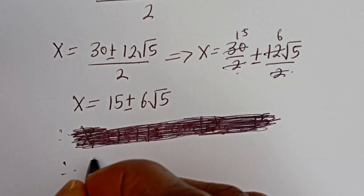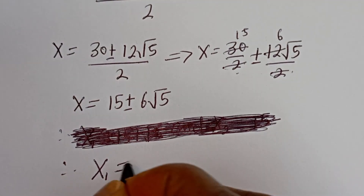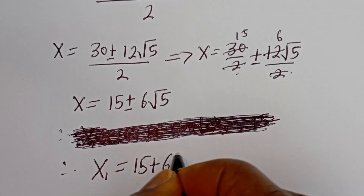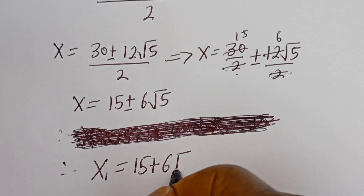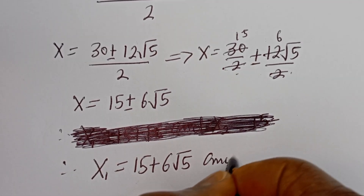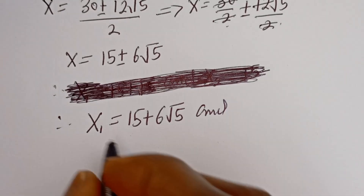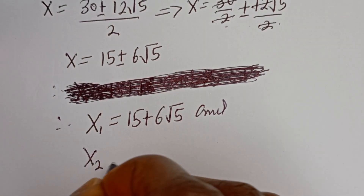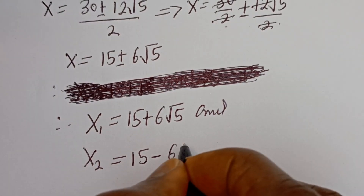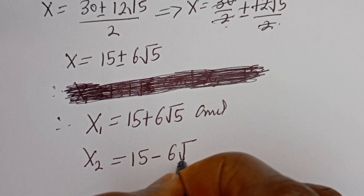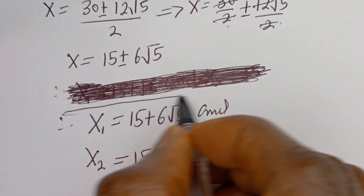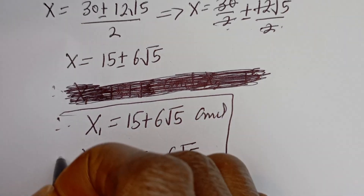Therefore, x1 is equal to 15 plus 6 root 5, and x2 is equal to 15 minus 6 root 5. These are the values of x1 and x2.